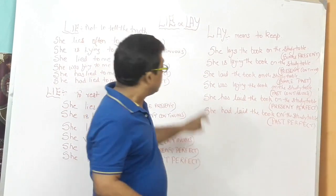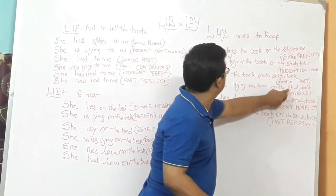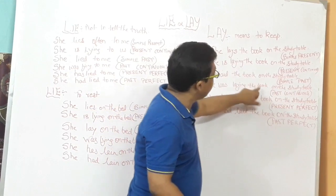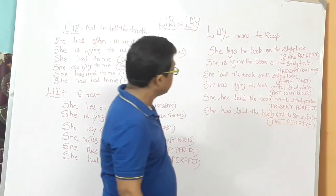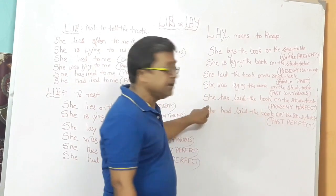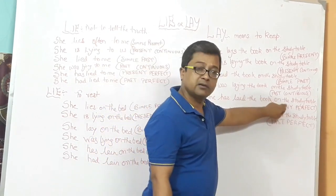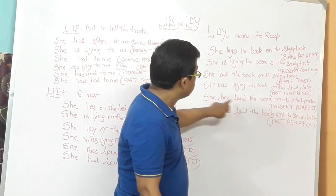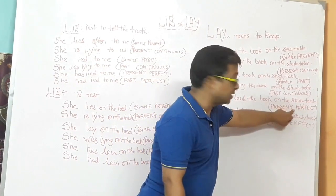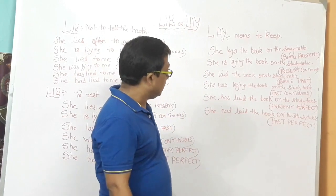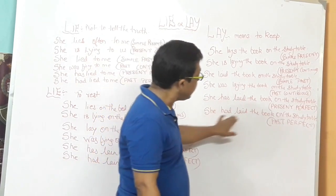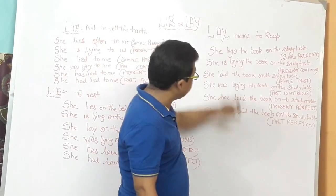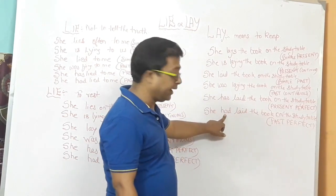In past continuous: 'she was laying the book on the study table' — the word lay in continuous form is 'laying.' In present perfect: 'she has laid the book on the study table' — the third form of lay is 'laid.' Finally, in past perfect: 'she had laid the book on the study table,' using 'had' and then the third form 'laid.'